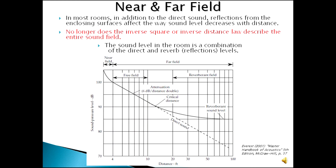This next slide shows us some information about the near and far field. In most rooms, the addition of the direct sound and reflections from enclosed surfaces affect the way sound level decreases with distance. When we were talking about the free field, we had the inverse square or inverse distance law to describe the entire sound field - when doubling the distance, the level drops by about 6 dB. That rule doesn't really apply when dealing with enclosed spaces where we have walls, a floor and a ceiling.